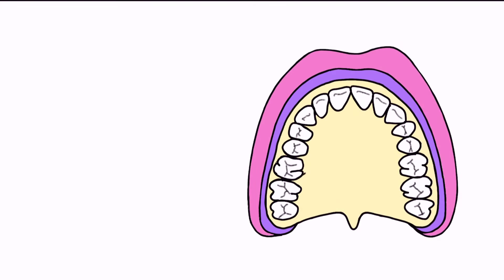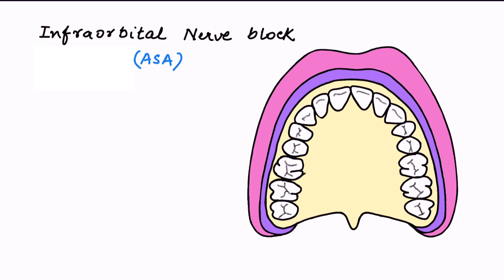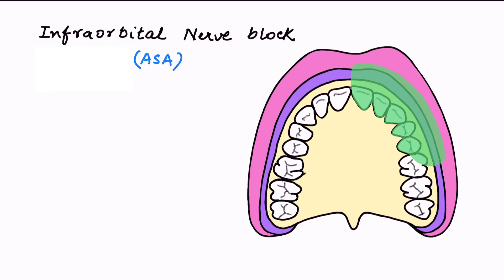The first nerve block we are going to talk about is the infraorbital nerve block, also called the anterior superior alveolar nerve block. As you can see, when we give this block, the entire anterior teeth up to the mesobuccal root of the first molar is anesthetized. It also includes the buccal periodontium and the associated structures.